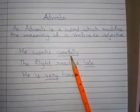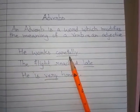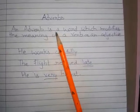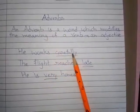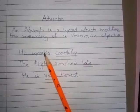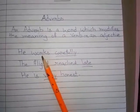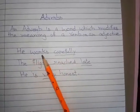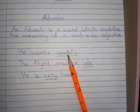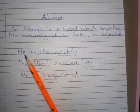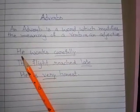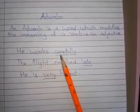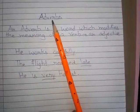यह जो underlined किया गया word है, यह adverb है जो verb walks की विशेषता दर्शाता है — he walks carefully. He: subject, pronoun; walks: verb; and carefully: adverb.